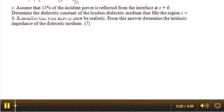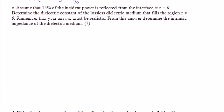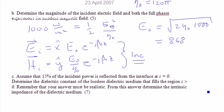This is the second part of quiz 3 from the spring of 2007. We have already calculated the incident electric and magnetic fields in general form.